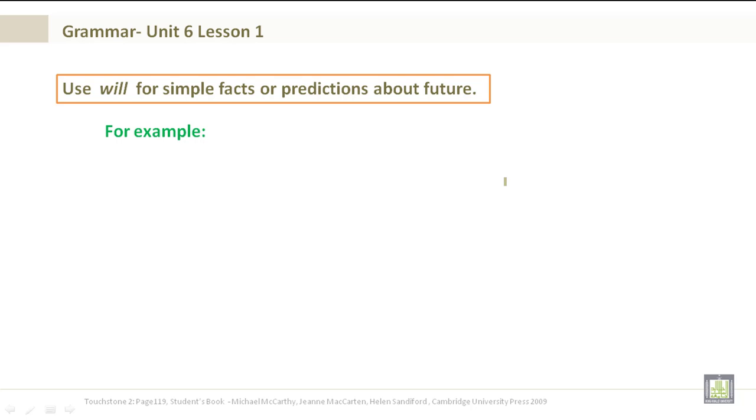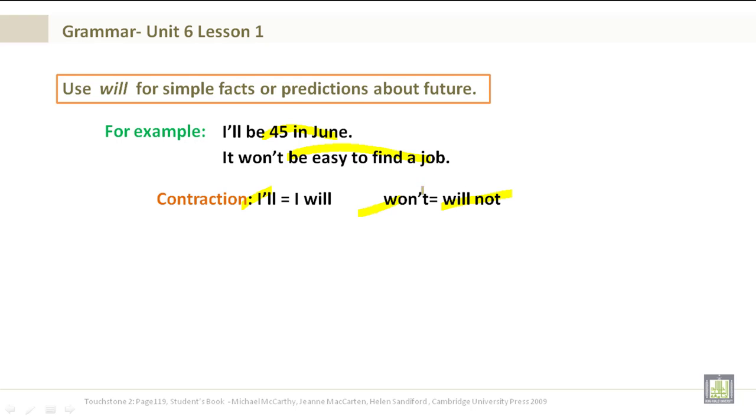Use will for simple facts or predictions about the future. For example, I'll be 45 in June. It won't be easy to find a job. Contractions: I will becomes I'll, will not becomes won't.